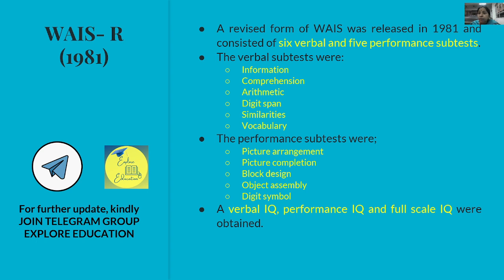The 6 verbal tests in WAIS-R are: Information, Comprehension, Arithmetic, Digit Span, Similarities, and Vocabulary. The 5 performance tests are: Picture Arrangement, Picture Completion, Block Design, Object Assembly, and Digit Symbol. The performance tests do not require verbal language.